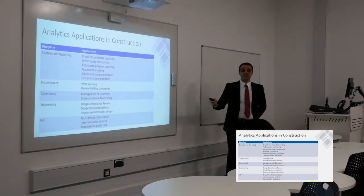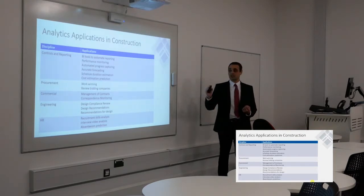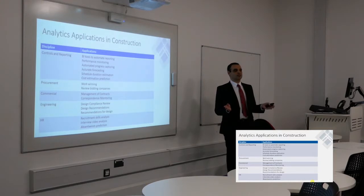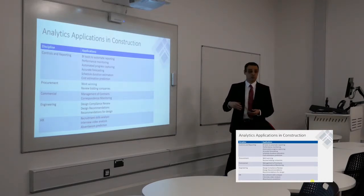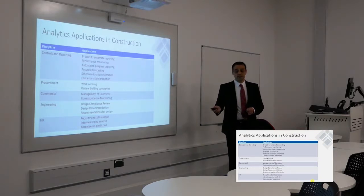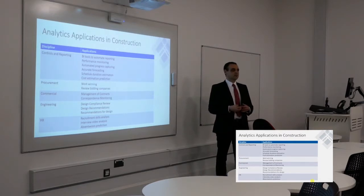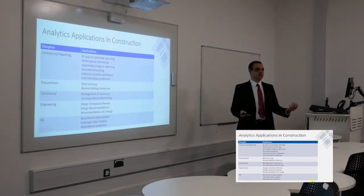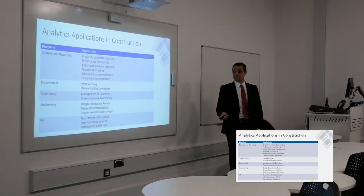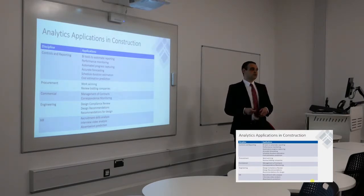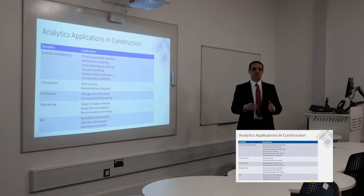On the commercial side, text analytics can allow a computer to read a contract, extract requirements, and ensure compliance. The same applies to correspondence — in Outlook you can see AI telling you there are actions in an email, or that you've missed an attachment — that's natural language processing at work. In engineering, if you have design specifications, NLP can understand them and big data analytics can perform compliance checks of your design against those specs, and also make design recommendations.